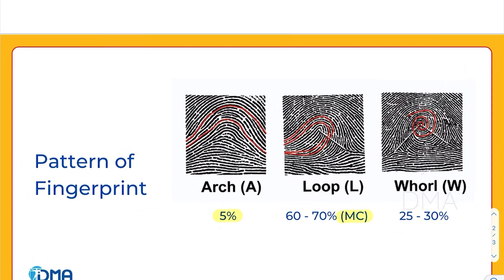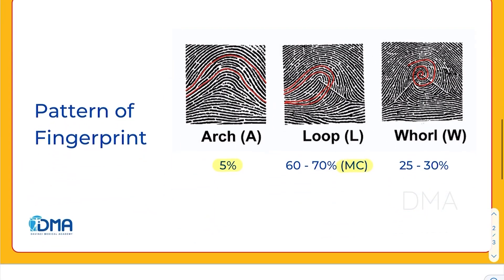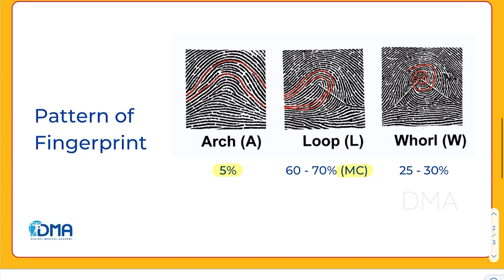And hence we covered these three fingerprint patterns. You know how to identify them, and we also know that arch is the rarest fingerprint pattern, present in five percent of the population, and loop is the most common fingerprint pattern, present in 60 to 70 percent of the population. That's it for today — thank you for watching.